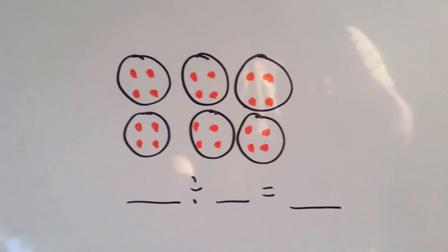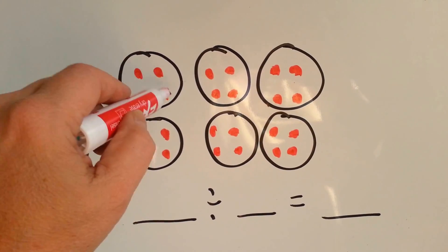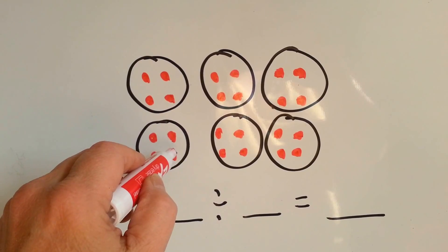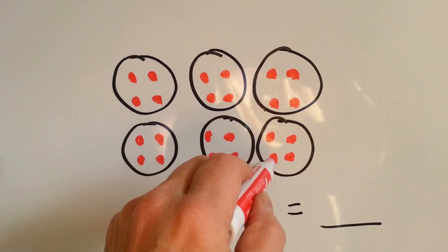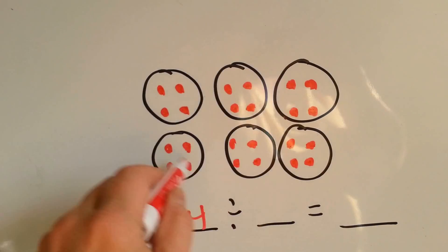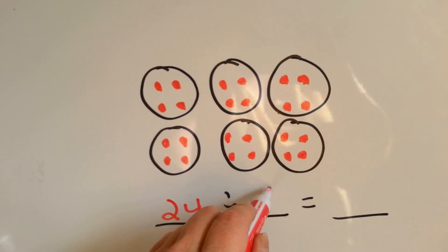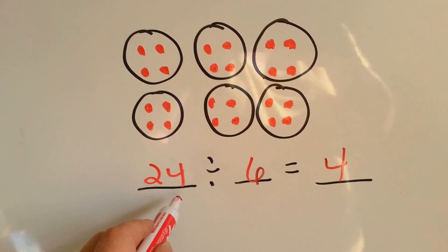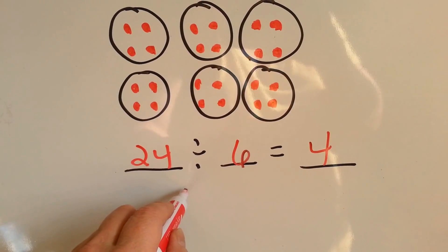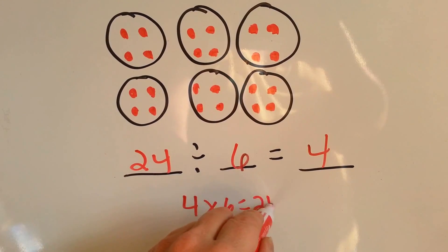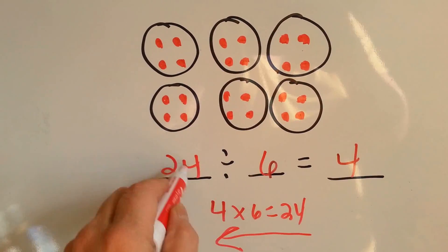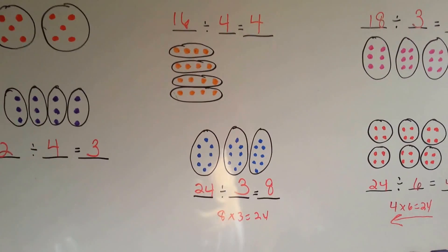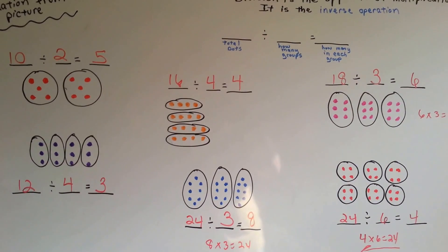Last one. Total number of dots: 1 through 24. How many groups? 1, 2, 3, 4, 5, 6. How many are in each group? 4. 24 divided by 6 equals 4. Because 4 times 6 equals 24. The opposite of division is multiplication — it's the inverse, it's the opposite.